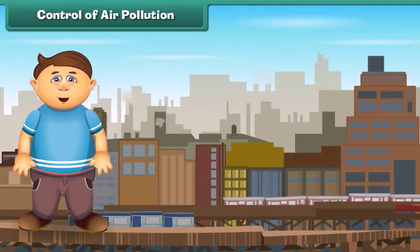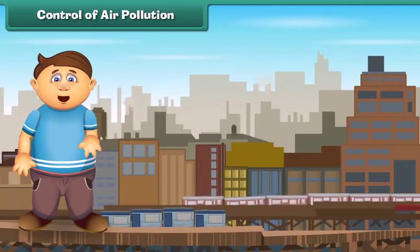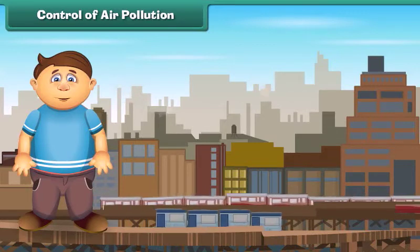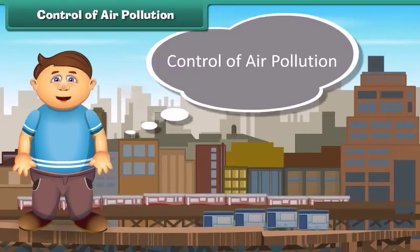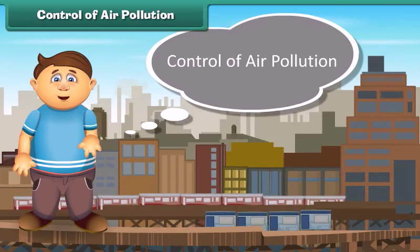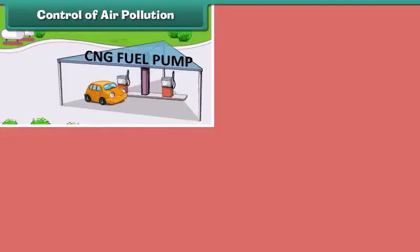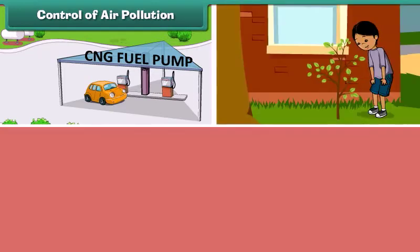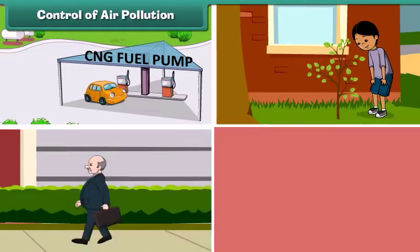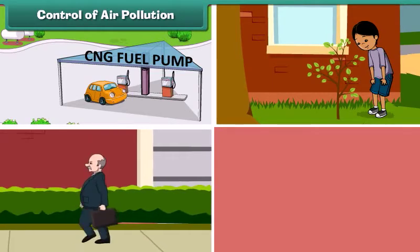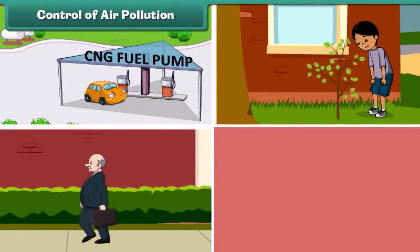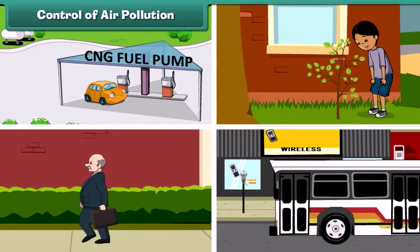Now the question is, how can we control air pollution? There are many things that we can do. It can be controlled by using clean fuels such as CNG in vehicles and industries, planting new young plants, preferring walking over driving, and using public transport for transportation.